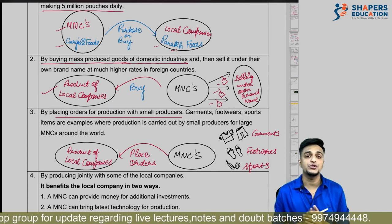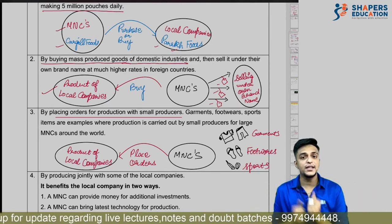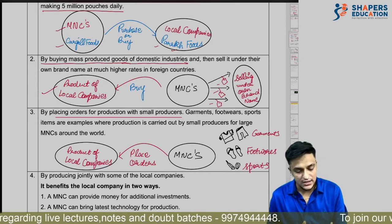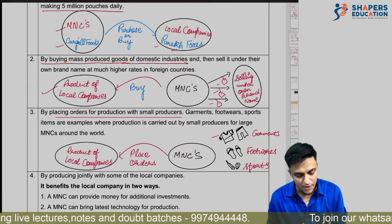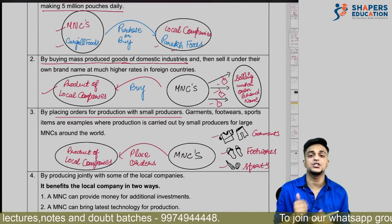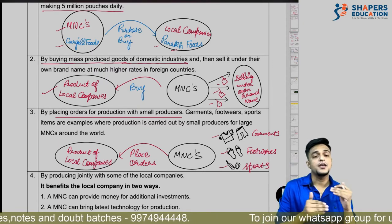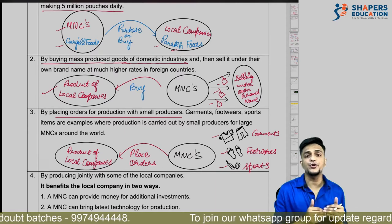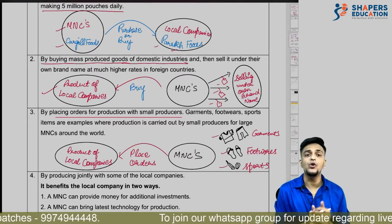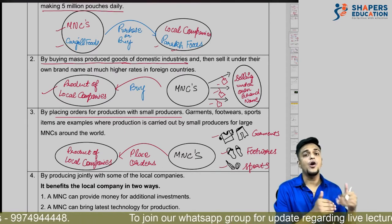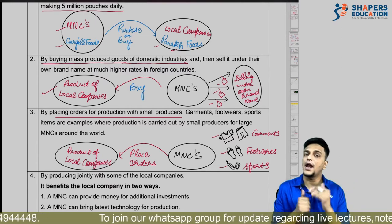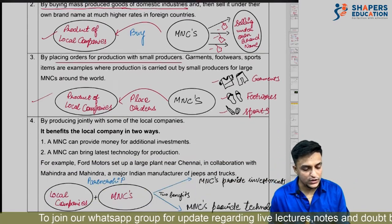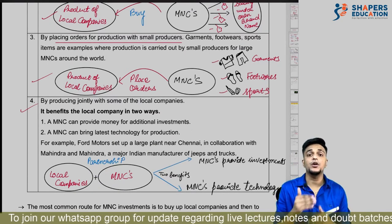Third way: by placing orders for production with small producers. Some MNCs give orders to small producers to manufacture specific goods or products. Examples: garment, footwear, and related industries. Generally MNCs go to rural areas, give orders to small producers, and after the order is complete, sell those products under their own brand name.